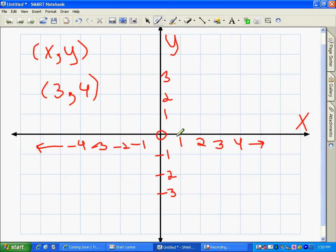So for x, y, for 3, 4, I'm going to start here. I'm going to go over to 3: 1, 2, 3, and then I'm going to go up 4: 1, 2, 3, 4. And this here is the point 3, 4. And if it had a letter, you would put a letter next to it just to kind of name that point.